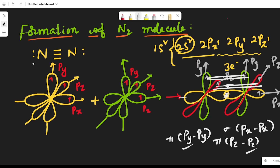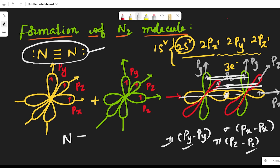This is how the nitrogen molecule has a triple bond. The py–py lateral overlap is perpendicular to the internuclear axis, forming one pi bond, and pz–pz forms another pi bond — totaling three bonds between the nitrogen atoms. The nitrogen molecule has a linear structure and each nitrogen atom contains one lone pair of electrons.